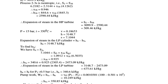The expansion work in the high pressure turbine is H2 minus H3S = 3099.9 minus 2590.44 = 509.46 kJ per kg. Then at 15 bar and 350 degree Celsius, this is again in the superheated zone. From the superheated steam table, specific volume = 0.18653, enthalpy H4 = 3148.7 kJ per kg, and entropy S4 = 7.1044 kJ per kg·K.